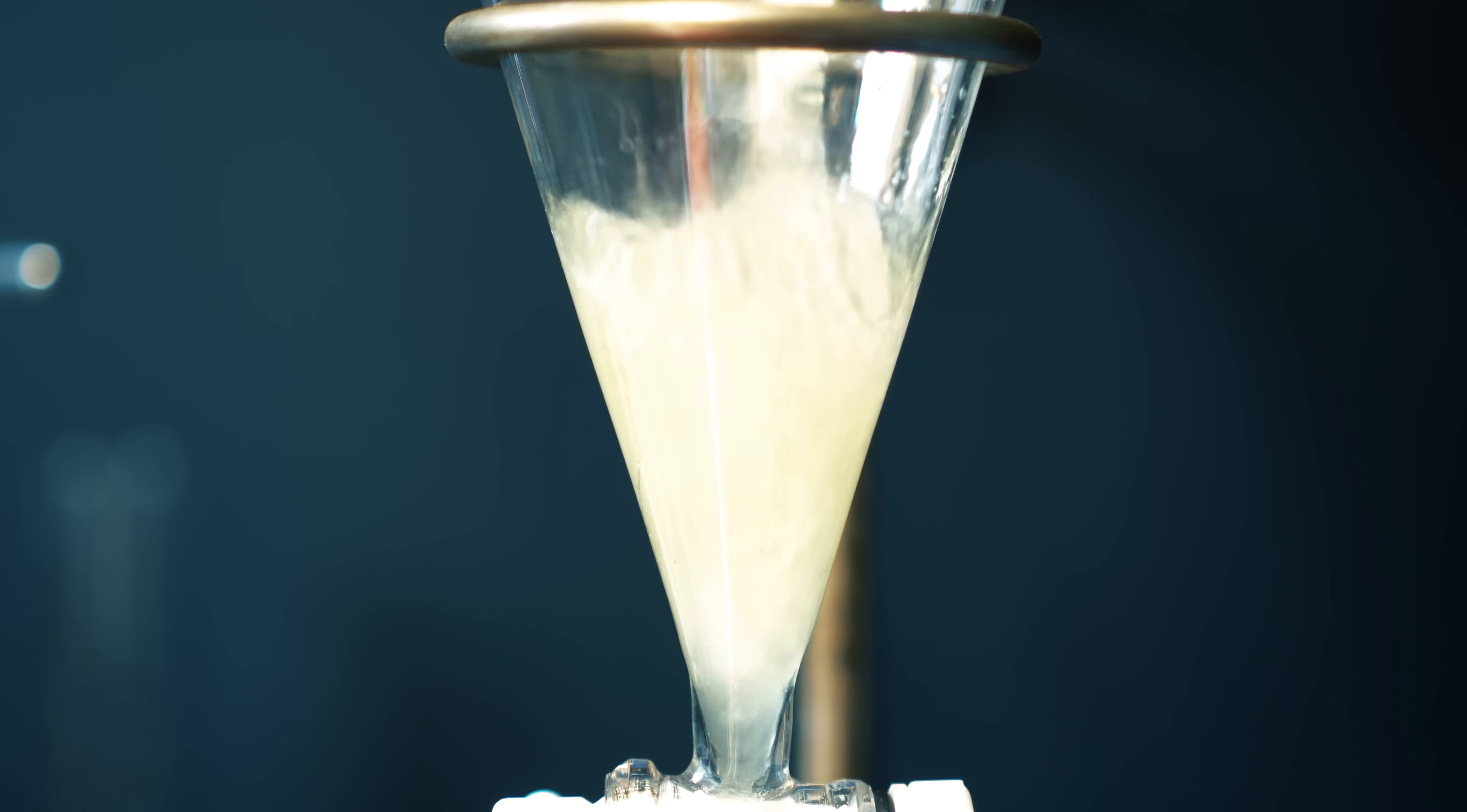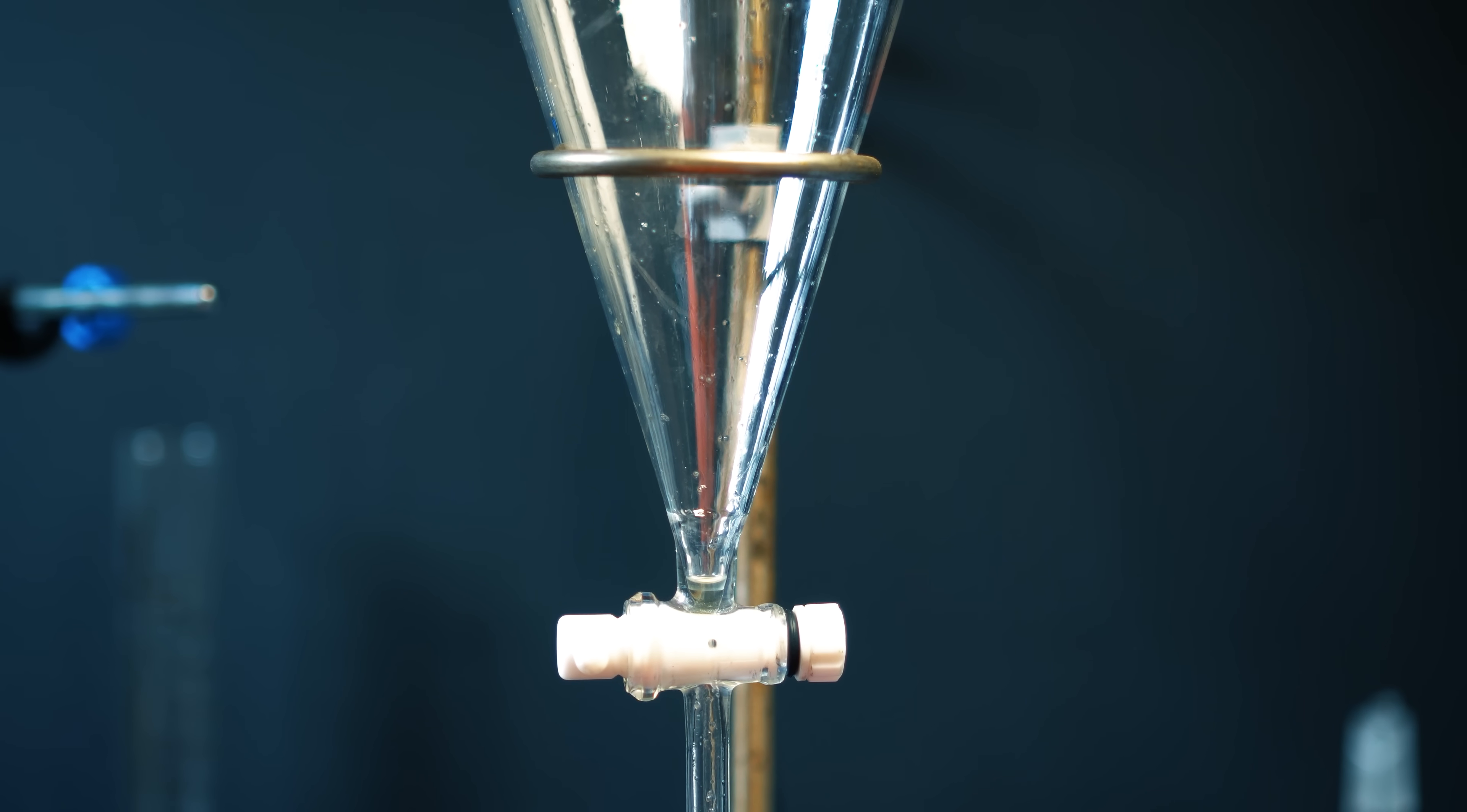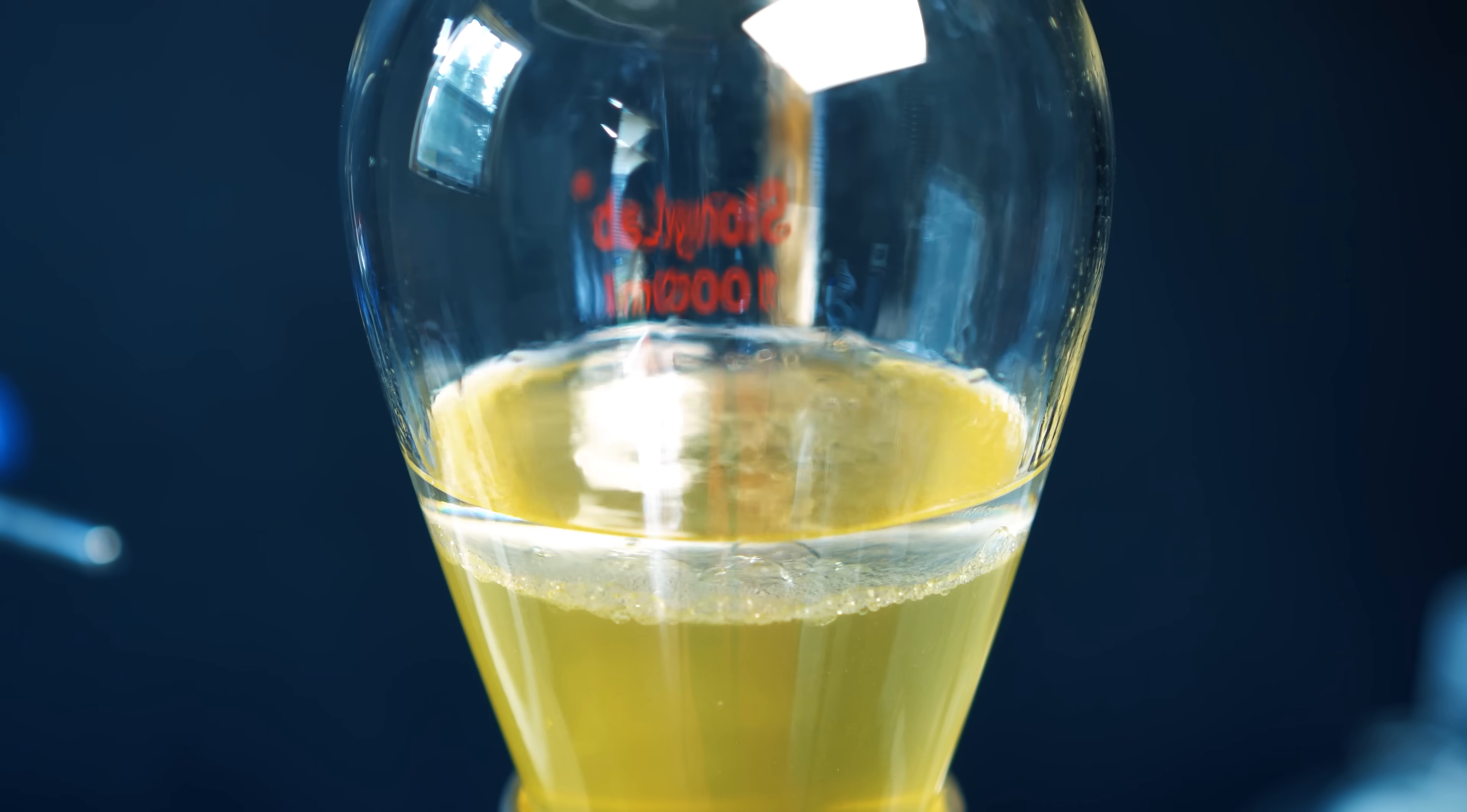What we need to do now is separate the toluene from our aqueous layer. We now need to keep the organic layer as the product is in the organic layer. So I separated it out. Now we're actually going to extract from our aqueous layer again with some toluene. This is me pouring the aqueous layer back in. I added 100ml of toluene and the reason that we're doing this is if there's any leftover arecoline in the aqueous layer, we need to get it out with the toluene.